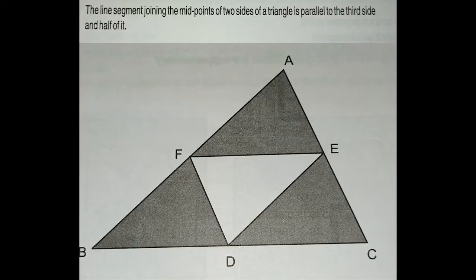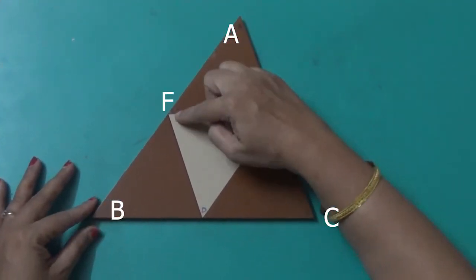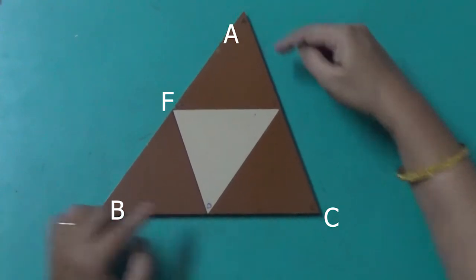Suppose this is triangle ABC. This point F is the midpoint of side AB, this point E is the midpoint of AC, and this point T is the midpoint of side BC.